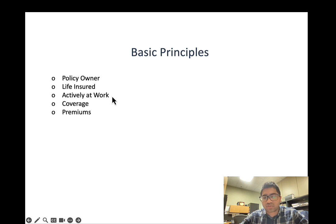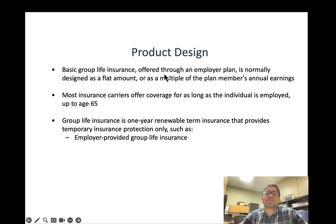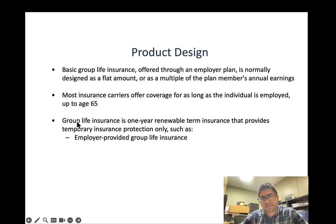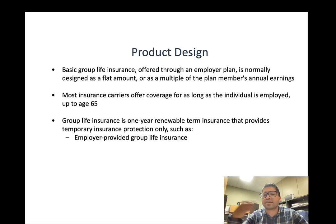You need to be actively at work to get coverage. The coverage amount is usually a multiple of your annual salary — two or three times is common. For example, a $100,000 salary would mean $200,000 in coverage. Premiums are usually paid by the employer. Group life insurance is one-year renewable term insurance that provides temporary insurance protection only — it is a one-year contract that renews annually.